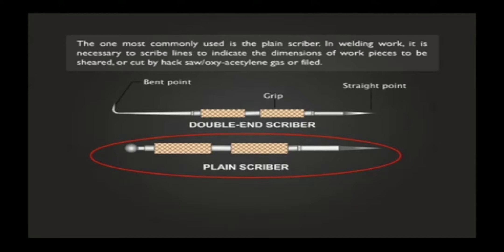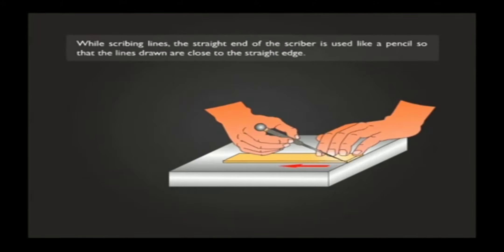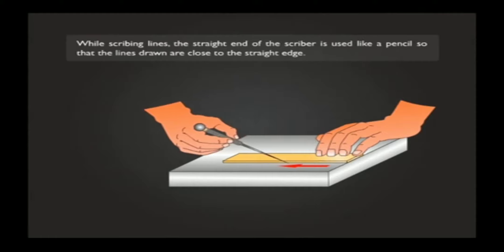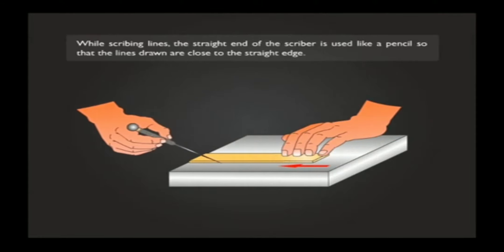While scribing lines, the straight end of the scriber is used like a pencil so that the lines drawn are close to the straight edge.